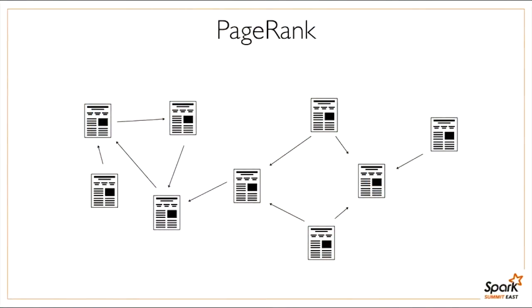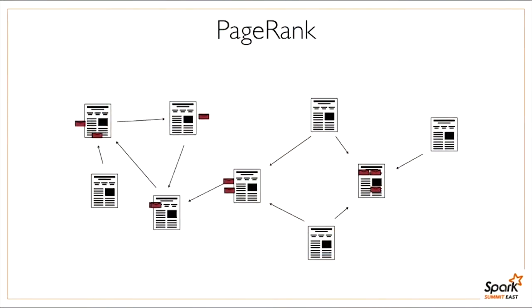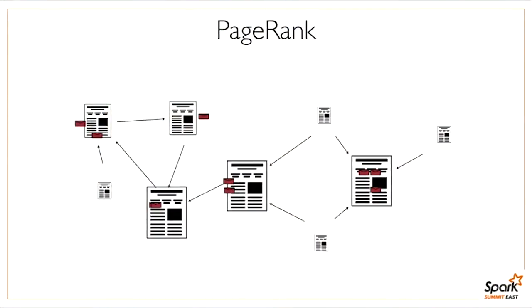There are a number of graph algorithms, and they all have something important in common. First, there's PageRank, which finds the most important pages in a graph. It uses links as a vote of importance, and a vote counts for more if it's coming from an important page. This algorithm works by repeatedly sending votes along links and then increasing the rank of pages that get more votes.